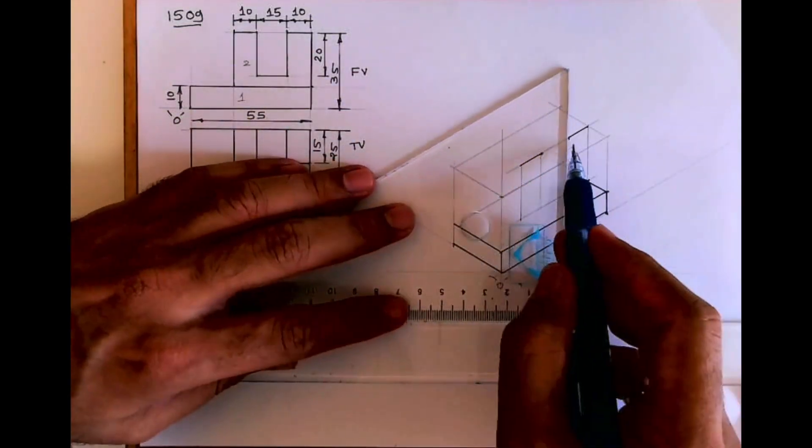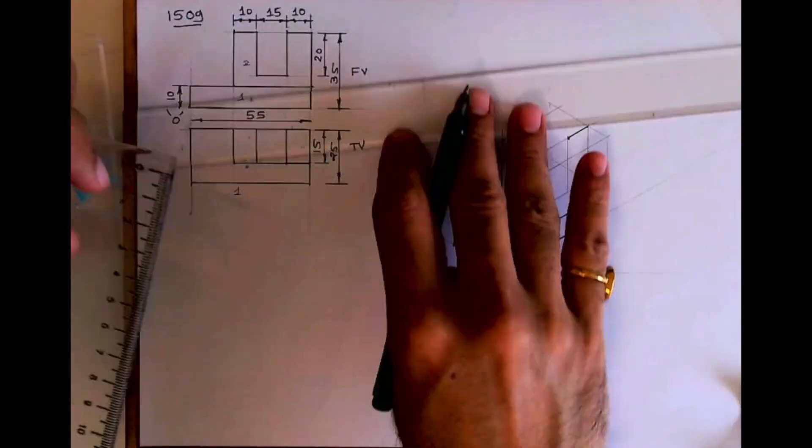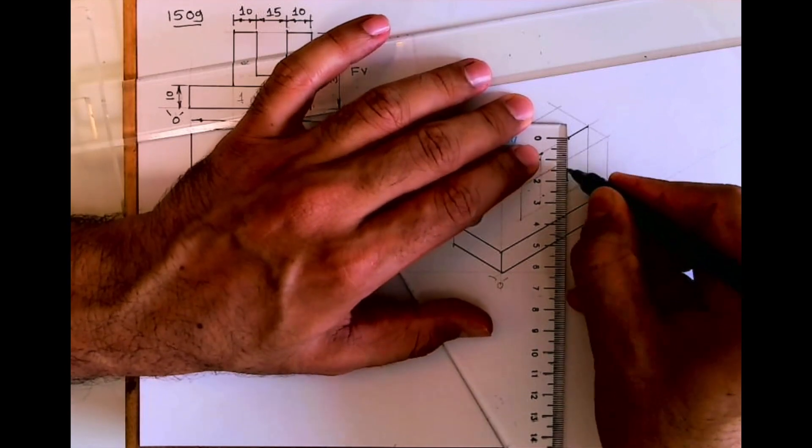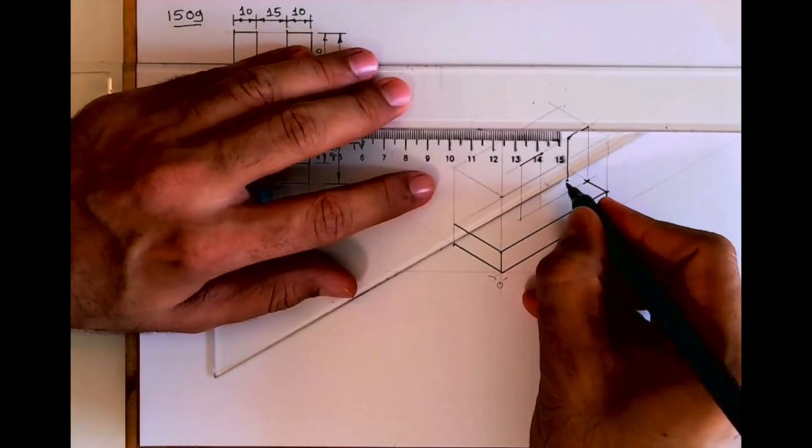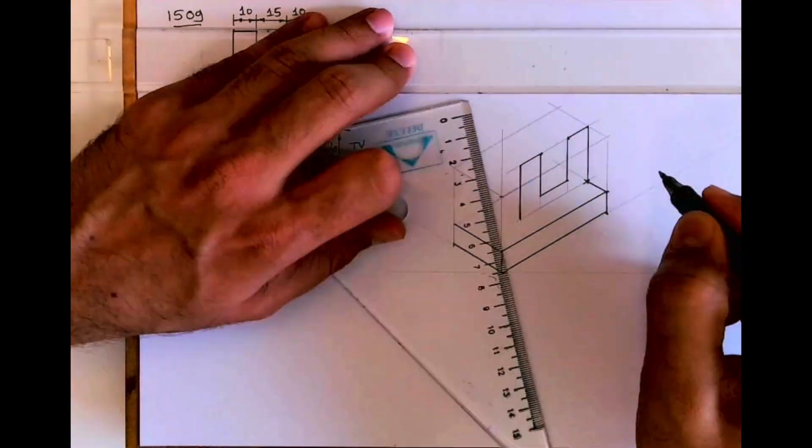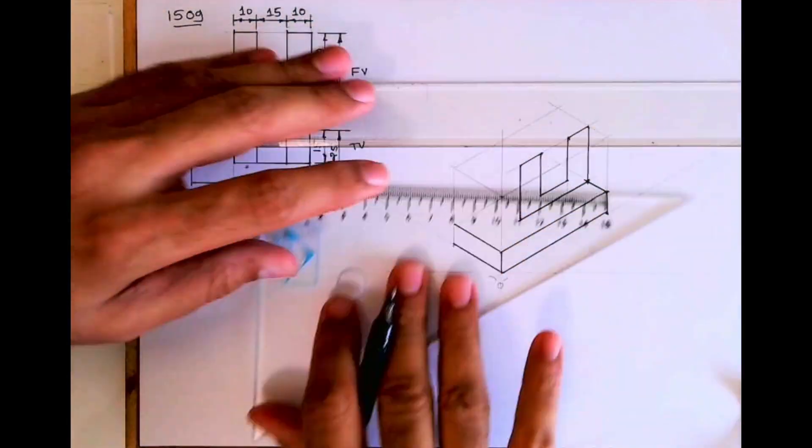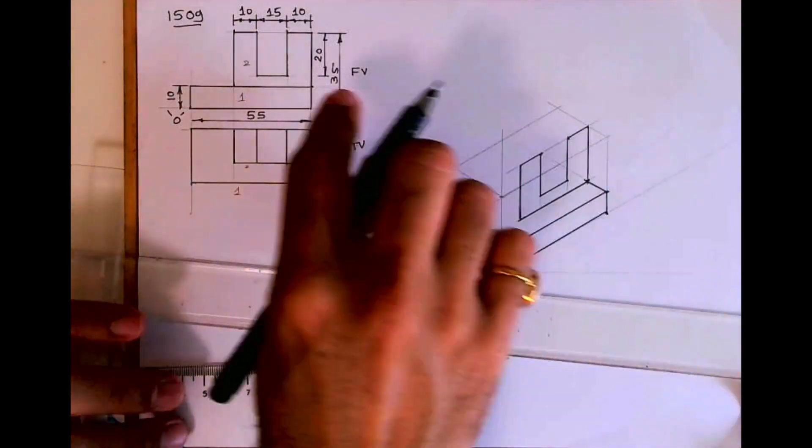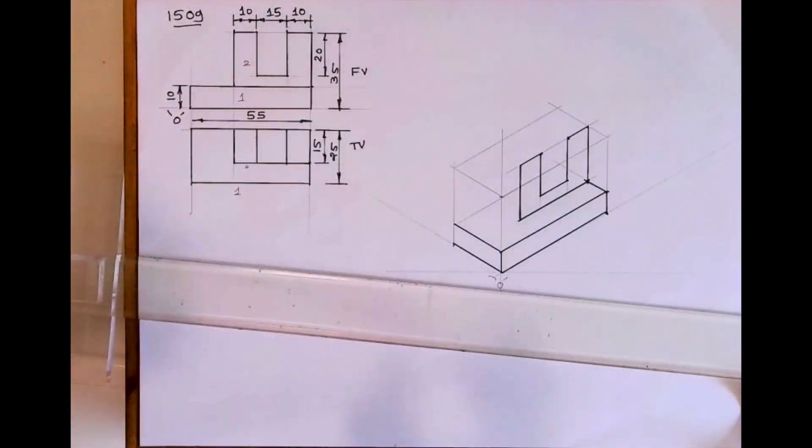And height is 20, so we just need to copy it as it is. Once we are done with the front part, then we can take it behind. How much you have to go behind? 15.